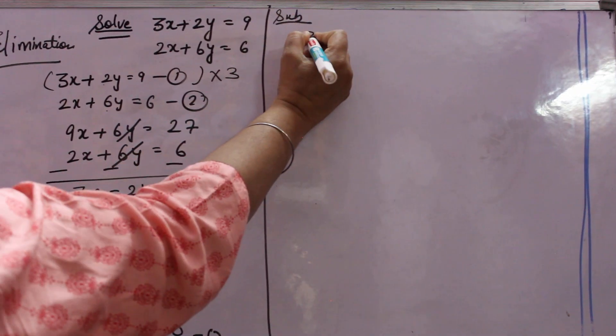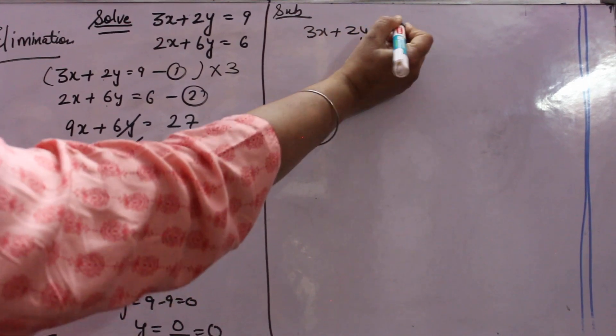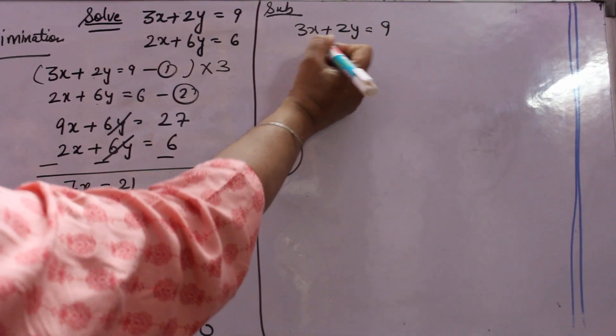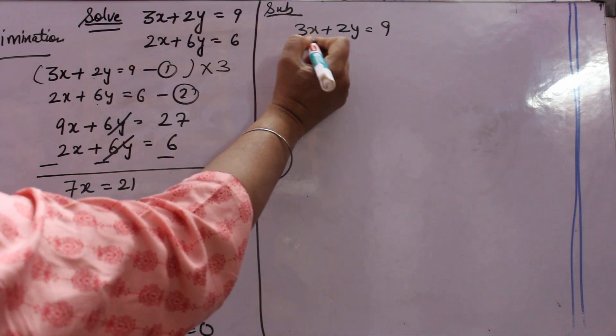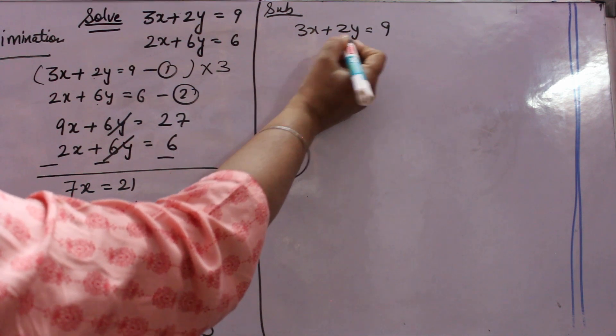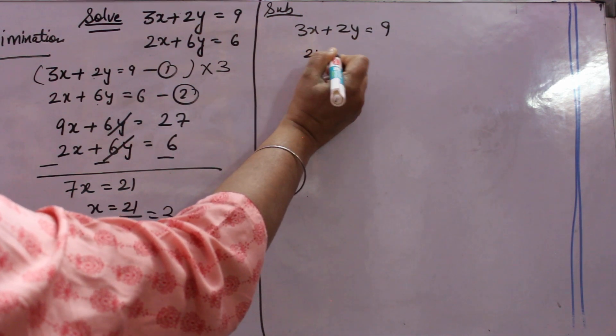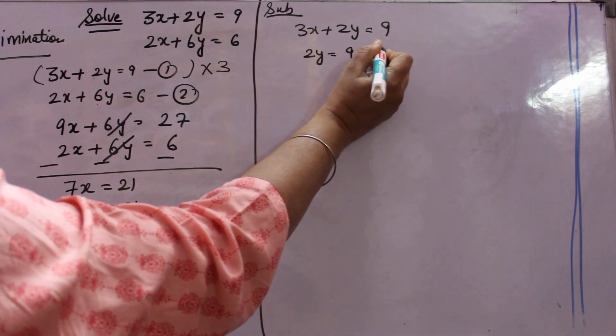In this, you have to take either value of x or y from first equation and put it in second equation. I am taking y value from first equation. You will get 2y is equal to 9 minus 3x.